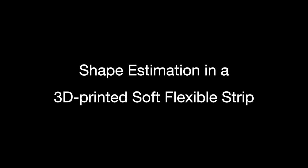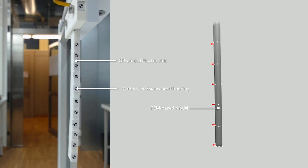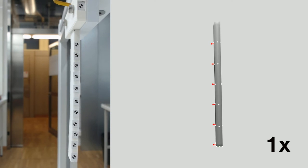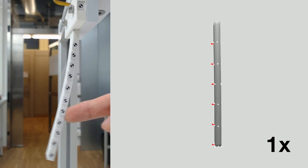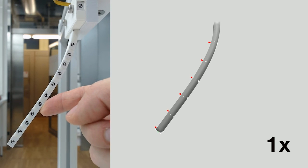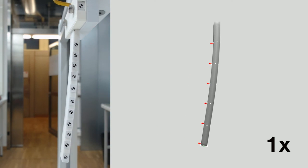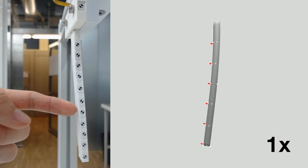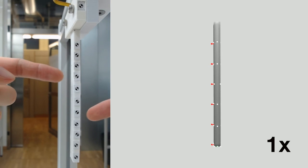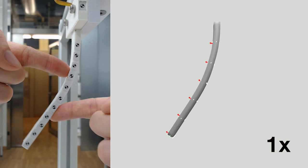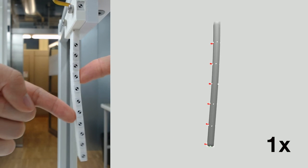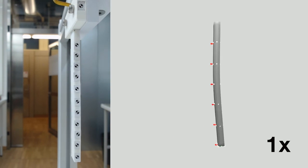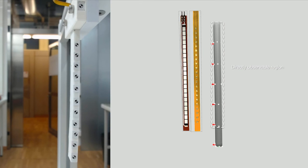We will demonstrate our approach, first, in shape estimation using a soft flexible strip. We manually apply forces to deform this strip and record the changes in resistance and the corresponding shape. This allows us to train the sensor model. The multi-tap sensor, combined with our FEM-based modeling approach, allows us to estimate the shape of this soft flexible strip with approximately 3% average relative error. This approach even extends to the features in the soft body that are not directly observable by the sensor.